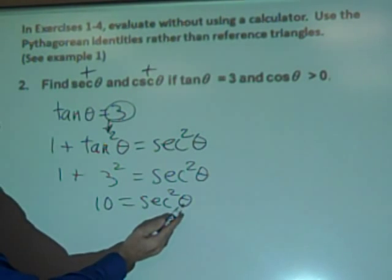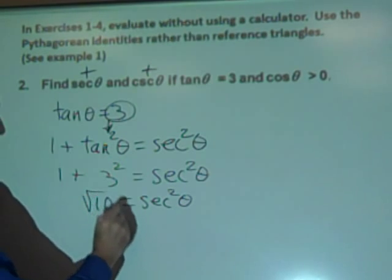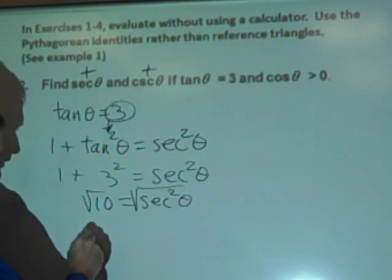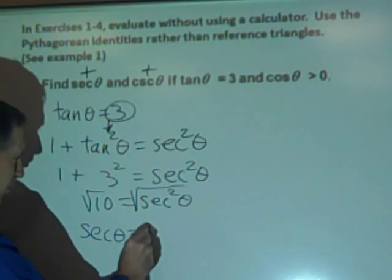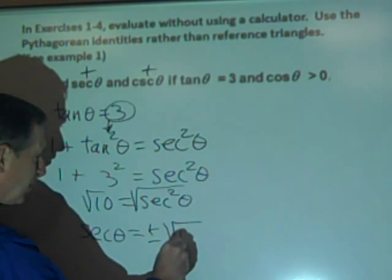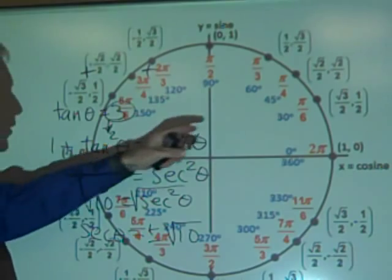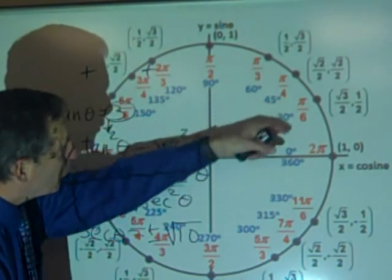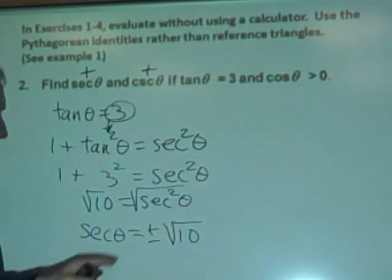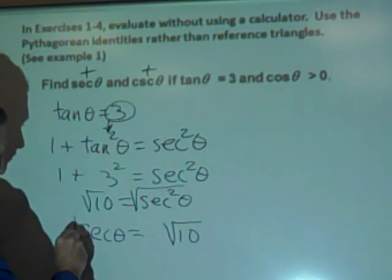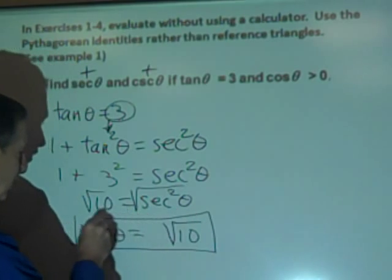We solve for secant theta by taking the square root of both sides, giving secant theta equals plus or minus square root of ten. Since we established we're in quadrant one, we eliminate the negative. So secant theta equals square root of ten.